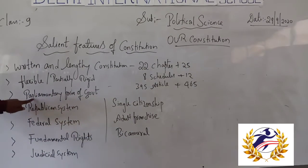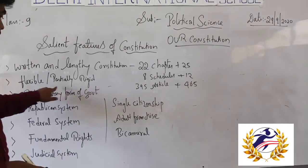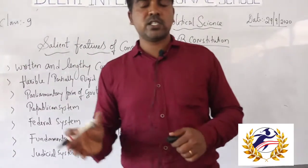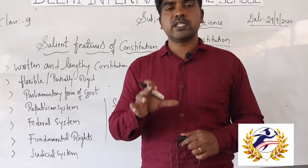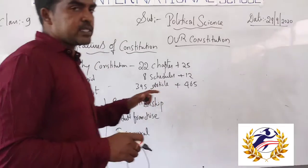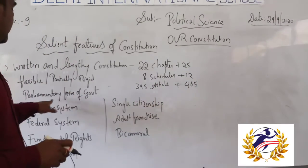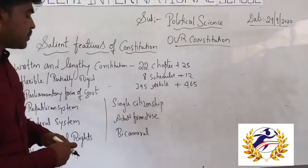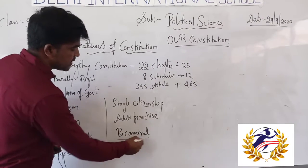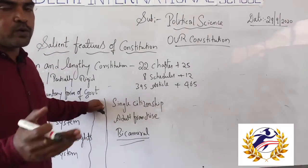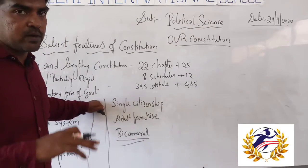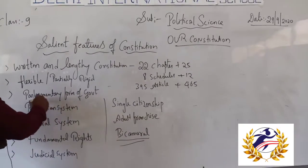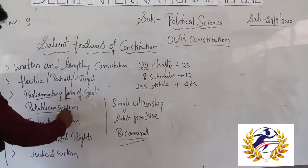Next is flexible and partially rigid — there is some leniency as well as strict rules and regulations applicable to citizens. Next is the parliamentary form of government, which involves a bicameral system. Bicameral means two houses in parliament: Rajya Sabha and Lok Sabha. Lok Sabha is considered the lower house and Rajya Sabha is the upper house.